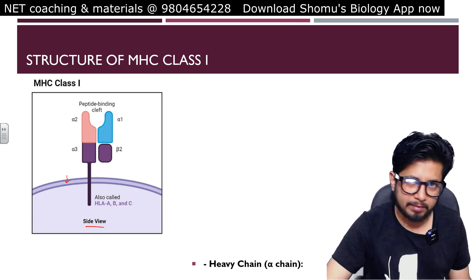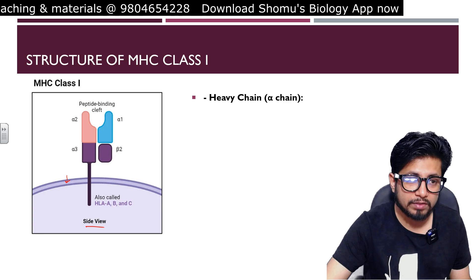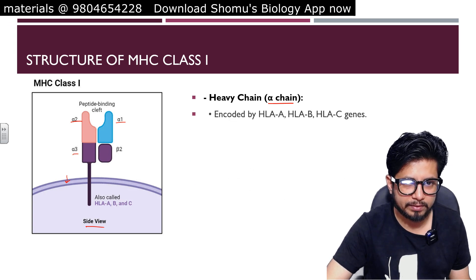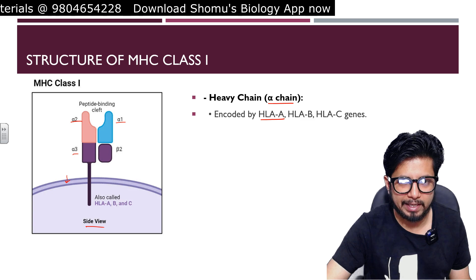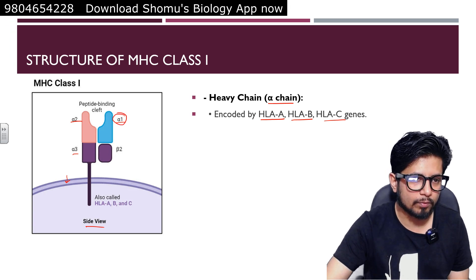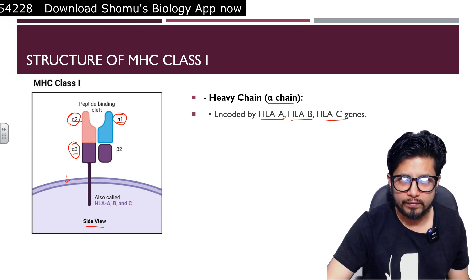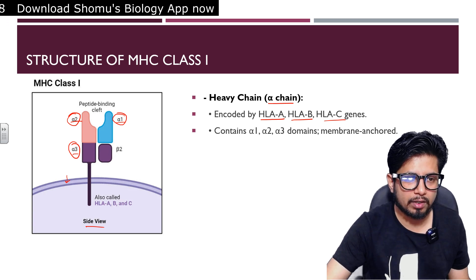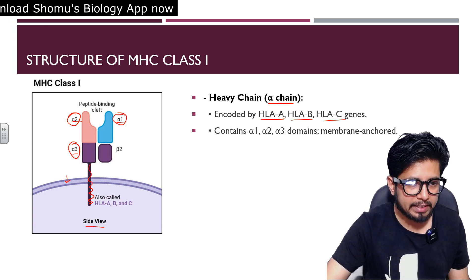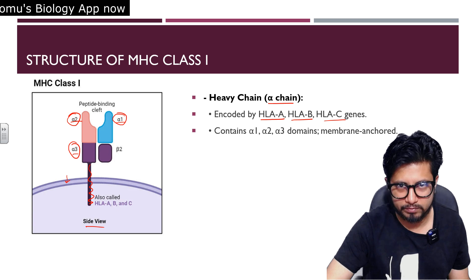In terms of structure, there are a few key points. First, MHC class 1 has two separate chains: a heavy chain and a light chain. The heavy chain is the alpha chain — alpha 1, alpha 2, and alpha 3 — encoded by genes such as HLA-A, HLA-B, and HLA-C. These HLA genes encode the alpha 1, alpha 2, and alpha 3 heavy chain units of the MHC class 1 molecule. The alpha chain is membrane-anchored, with alpha 3 directly embedded in the cell membrane.